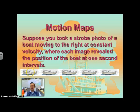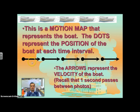Each image that we are taking is revealing the position of the boat at a one second interval. So we can see the boat, how it moves every second to the right. Our motion maps look pretty much like this, but instead of drawing a boat, we can just simplify it and say it's a dot. So the dot represents the position of any object at a one second time interval. And we always assume it's one second unless we specify a different time interval.